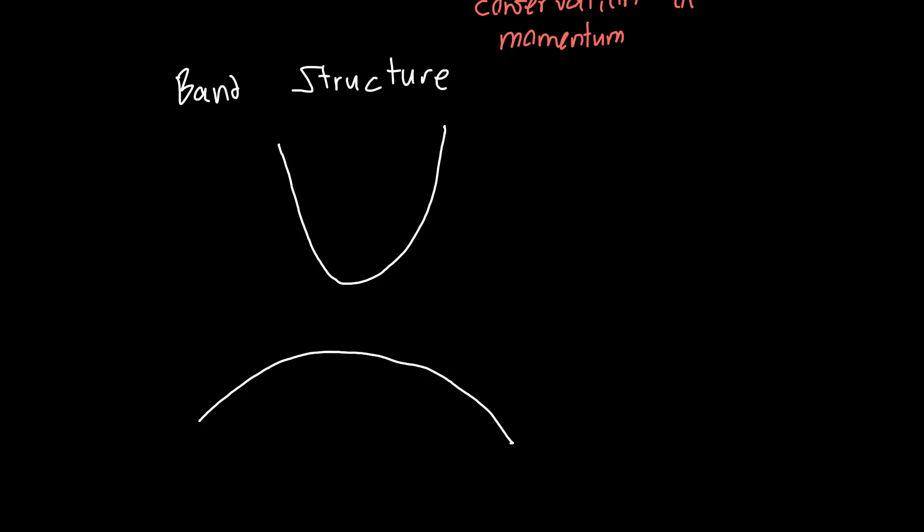And this is just a more useful - at least for optoelectronics - a more useful way of representing the energy of a bunch of different states. So now on the y-axis we still have energy, so this distance is still our band gap Eg, but now on the x-axis instead of space we have momentum or k, our wave number. And remember that the momentum of a particle is just Planck's constant times its wave number k. E-k diagrams are sort of the standard way of doing this. So this is our conduction band now and this is our valence band.